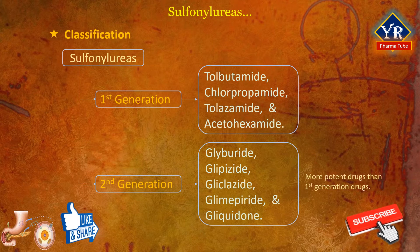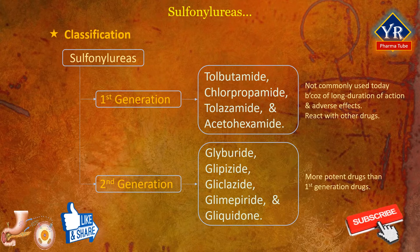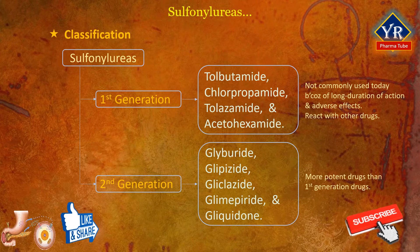The second generation agents are considerably more potent than the first generation agents. The first generation sulfonylureas are not commonly used today because they have a long duration of action and a higher incidence of adverse reactions and are more likely to react with other drugs. The main adverse effect is hypoglycemia. All the first and second generation compounds act by stimulating the beta cells of the pancreas to release insulin. The sulfonylureas are not effective if the beta cells of the pancreas are unable to release a sufficient amount of insulin to meet a patient's needs.